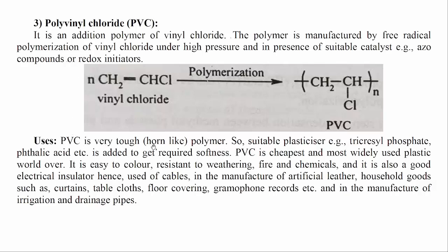PVC is a very tough, horn-like polymer. A suitable plasticizer, e.g. tricresyl phosphate or phthalic acid, is added to get the required softness. PVC is the cheapest and most widely used plastic worldwide. It is easy to color, resistant to weathering, fire, and chemicals, and is also a good electrical insulator. Hence it is used for cables, in the manufacture of artificial leather, household goods such as curtains, table cloths, floor covering, gramophone records, and in the manufacture of irrigation and drainage pipes.